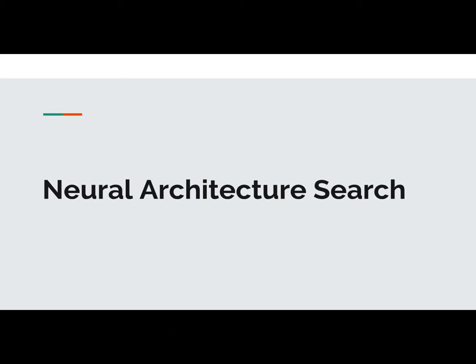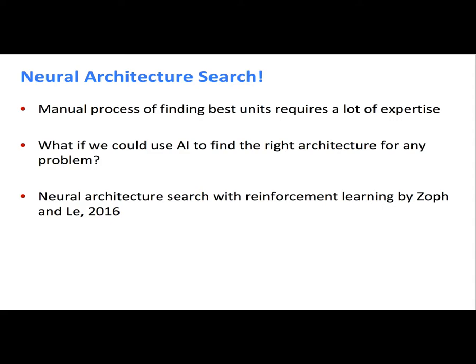Now I'll talk about Neural Architecture Search. The motivation is to automate the process of finding different architectures for neural networks. Currently, designing neural networks involves many design choices — filter sizes for CNNs, number of units in LSTMs — and often requires a lot of expertise. For example, choosing between L1 or L2 regularization depends on whether you want sparsity in your features or have discrete data.